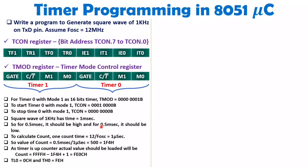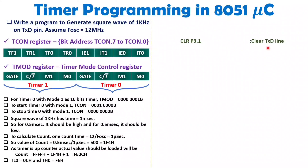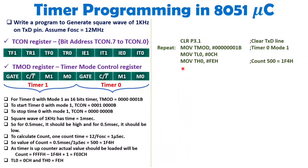Once you load TL0 with 0C hex and TH0 with FE hex, the timer will generate a delay of 0.5 millisecond. First, clear the TXD pin which is P3.1. Then configure TMOD to set Timer 0 in Mode 1. After that, load the count: TL0 = 0C hex and TH0 = FE hex, making count equal to 500.